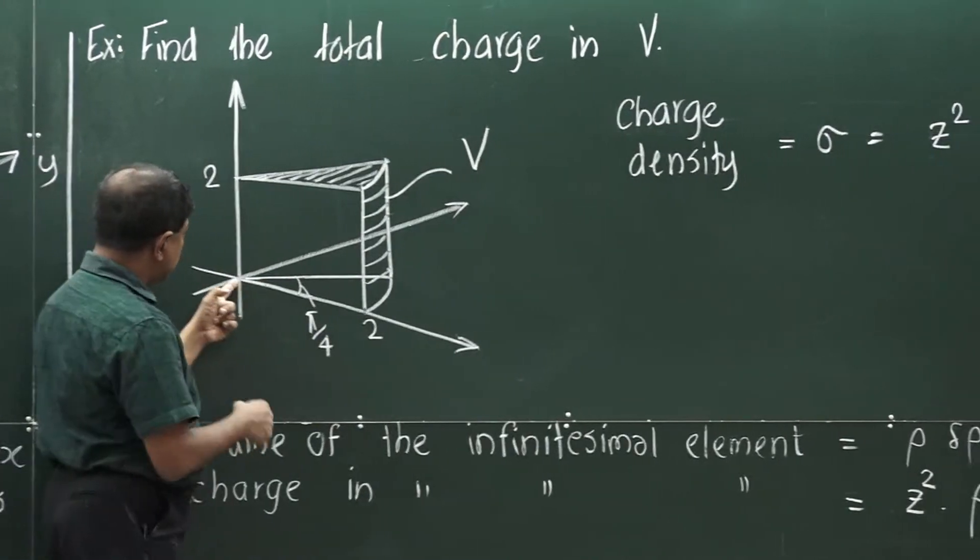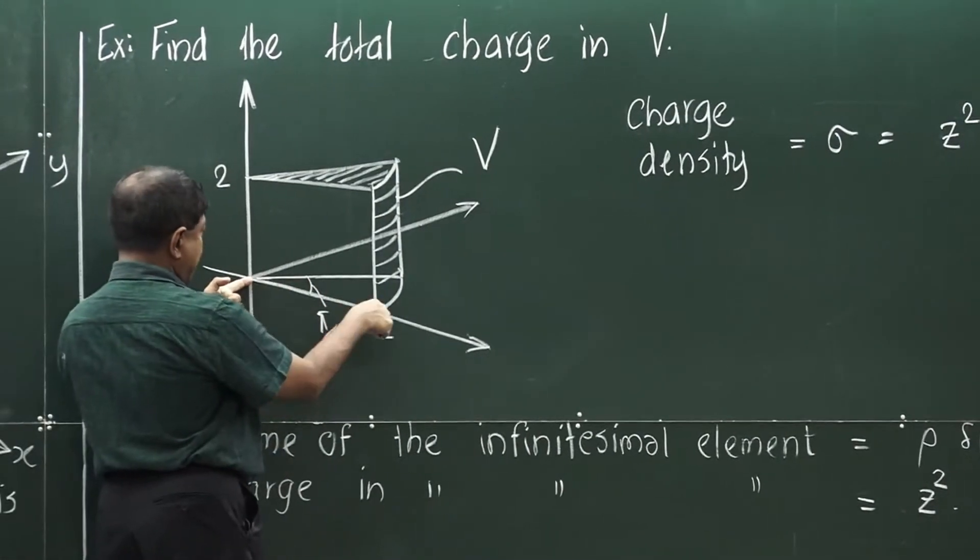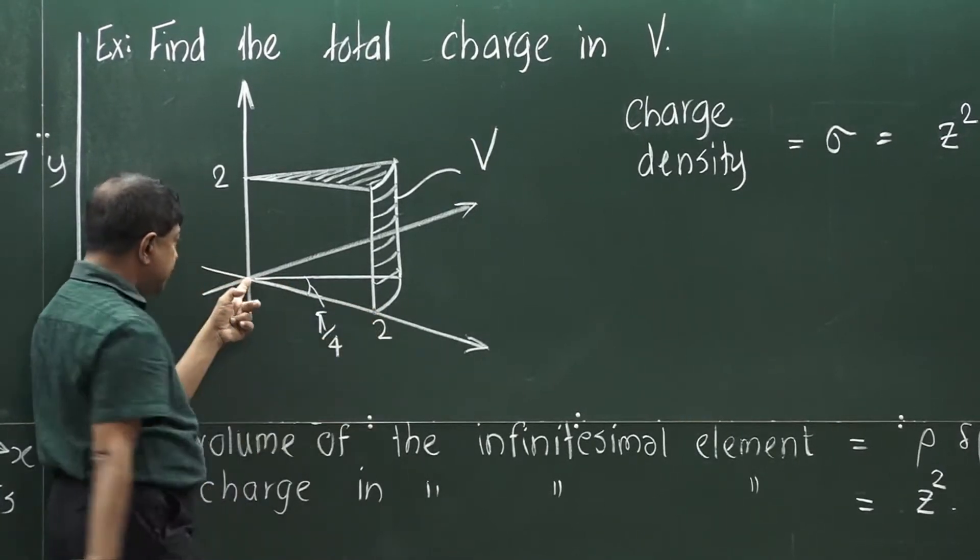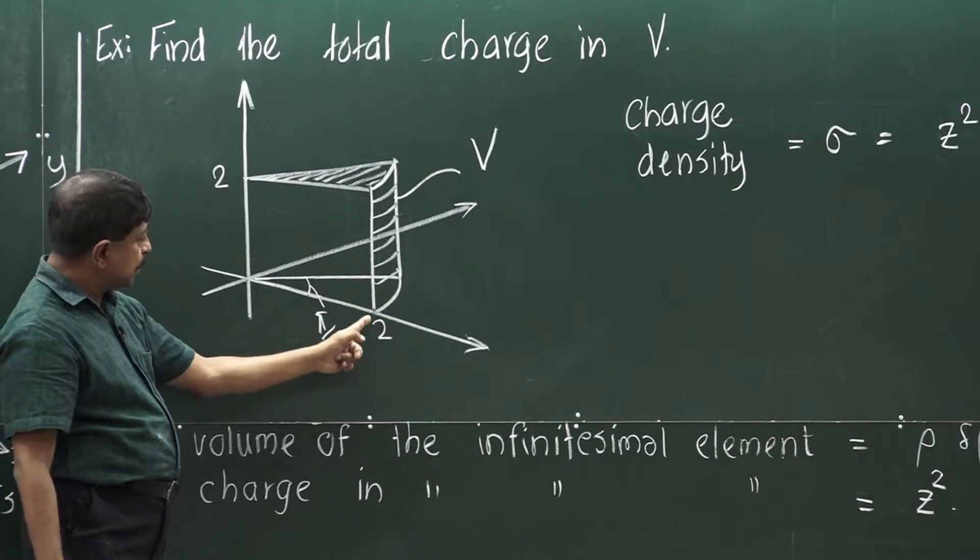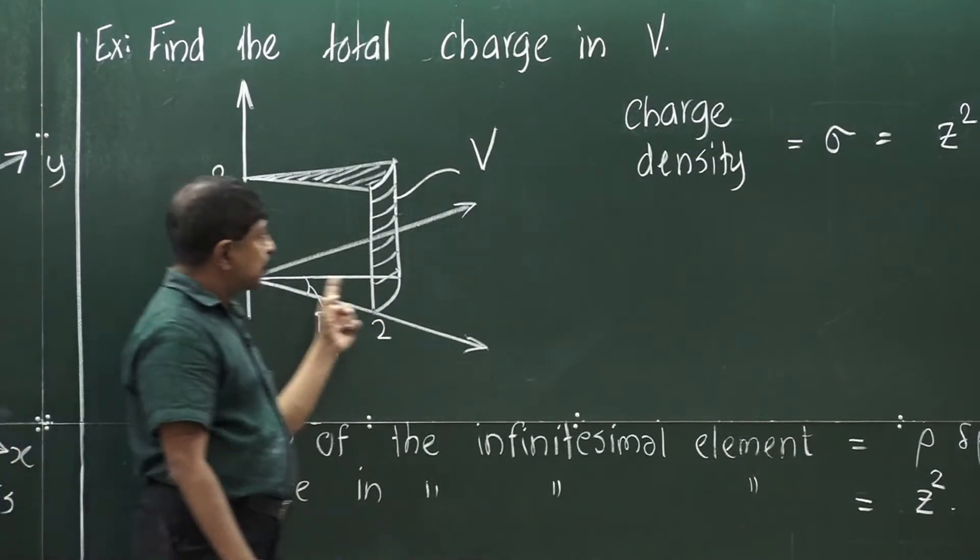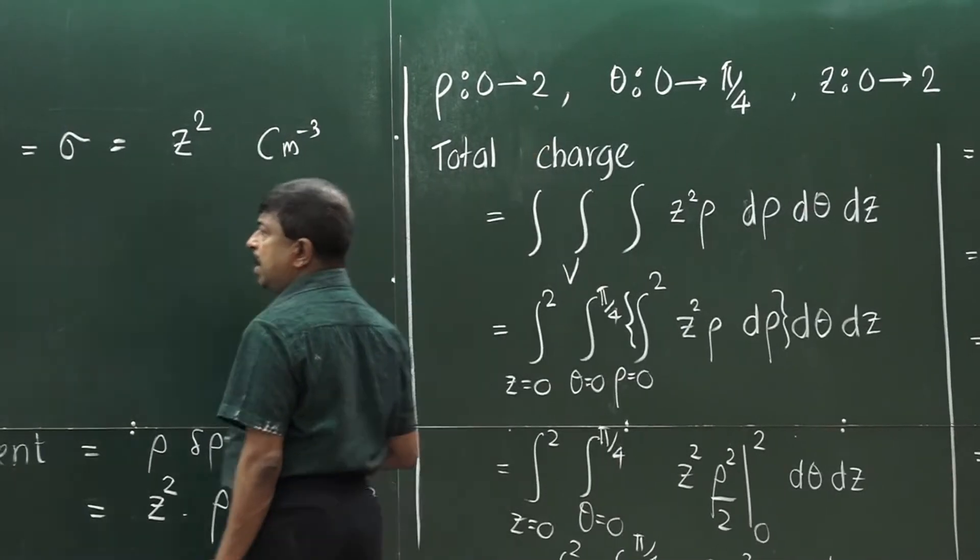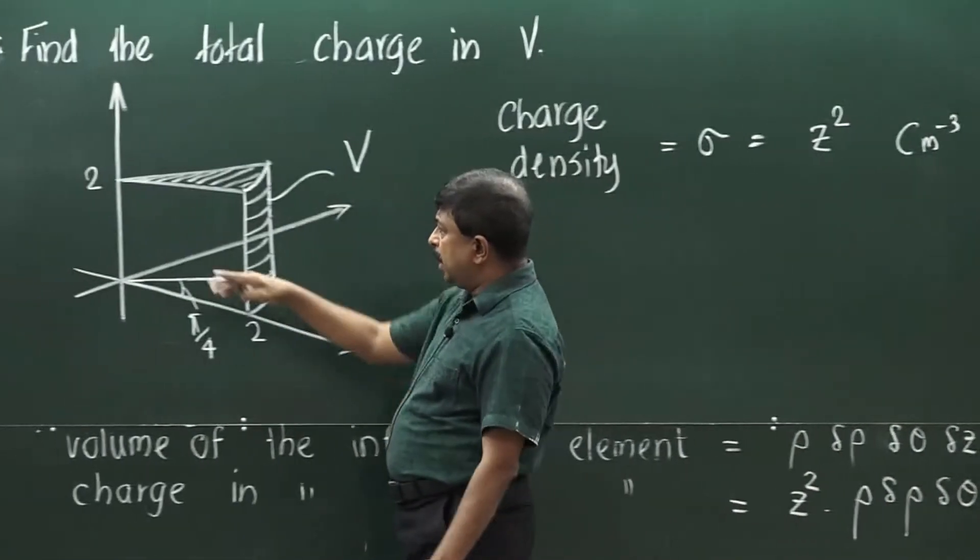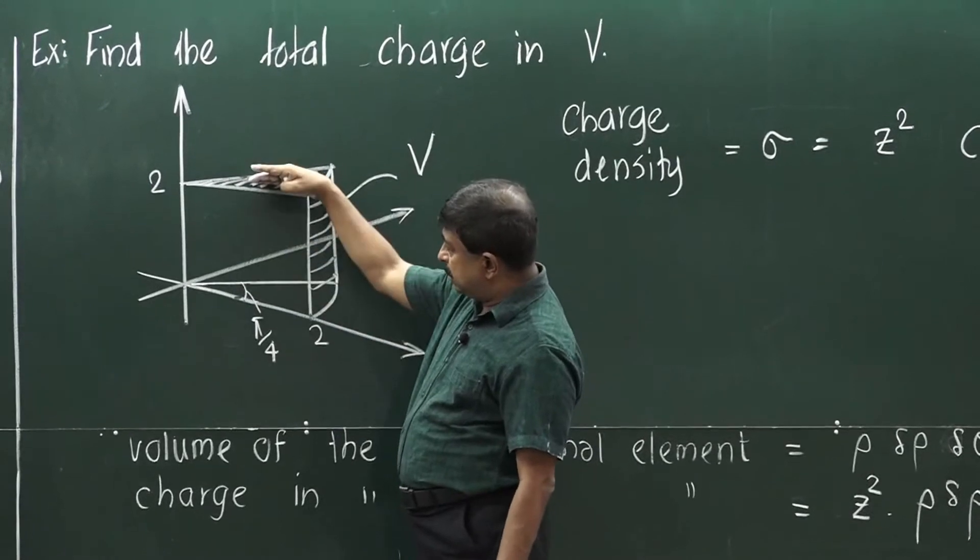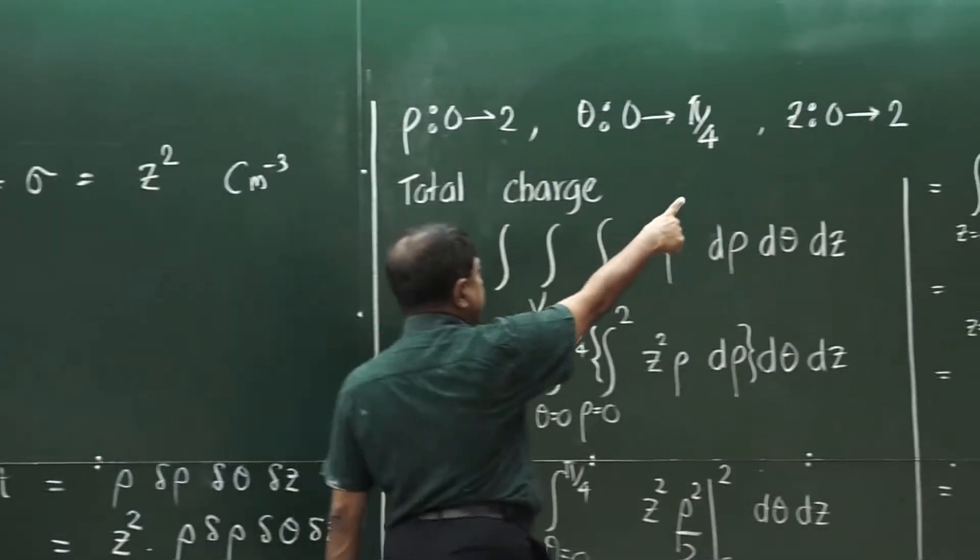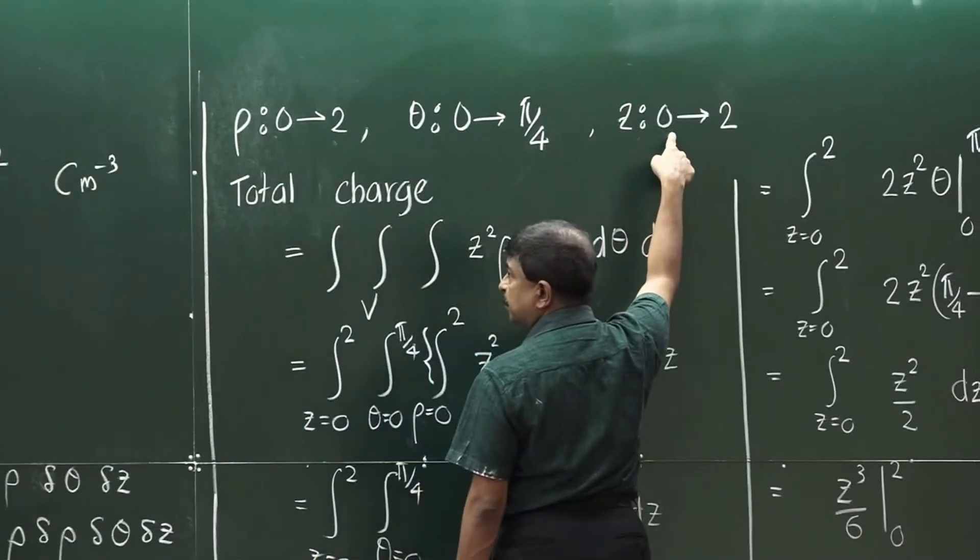Here you can see rho. Rho is the distance on xy plane, the maximum possible distance. It is two because the radius is two. So, rho goes from 0 to 2. And height z goes from 0 to 2 as well. You can see it here.